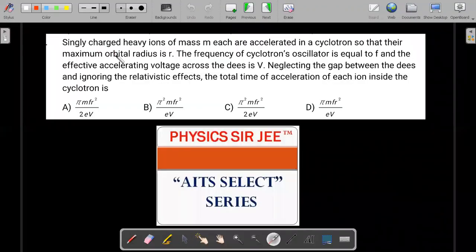So here's the formal wording of it. It's about a cyclotron. Singly charged heavy ions of mass M each are accelerated in cyclotron so that their maximum orbital radius is R. The frequency of the cyclotron's oscillator is equal to F and the effective accelerating voltage across the Ds is capital V, neglecting the gap between the Ds and ignoring the relativistic effects. The time of acceleration of each ion inside the cyclotron is given in four options. It should be carefully noted which parameters are in the options. So you want to give it a try? It's a very important JE advance concept.